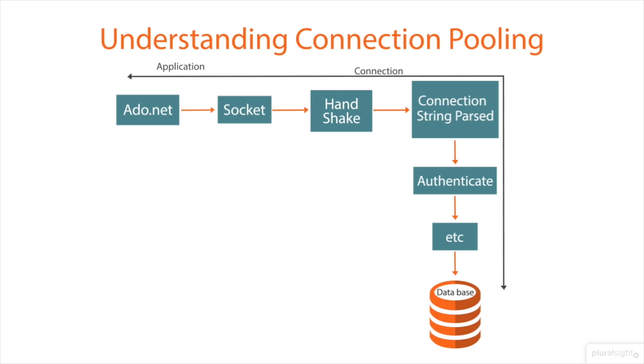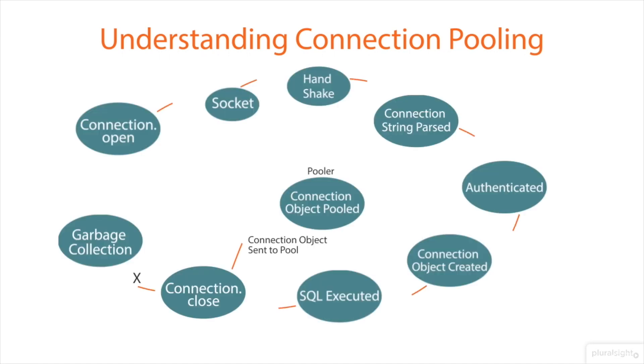In practice most applications use only one or a few different configurations for connections. This means that during application execution many identical connections will be repeatedly opened and closed. To minimize the cost of opening connections ADO.NET uses an optimization technique called connection pooling.